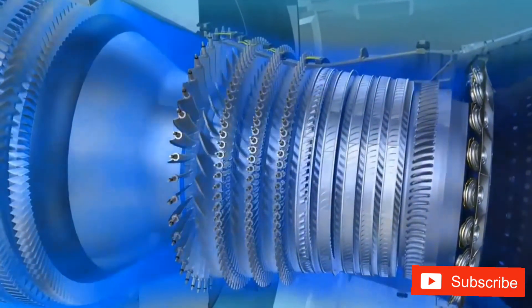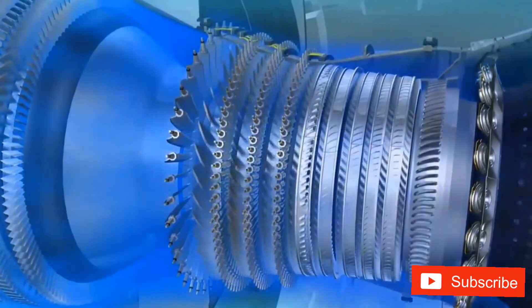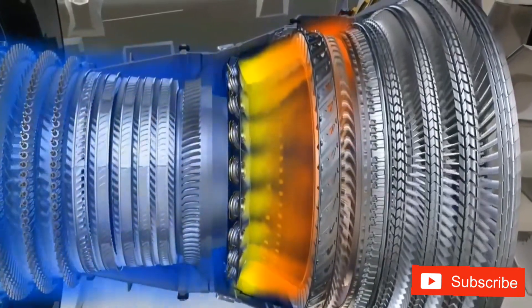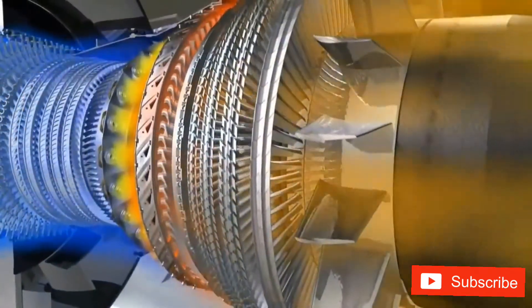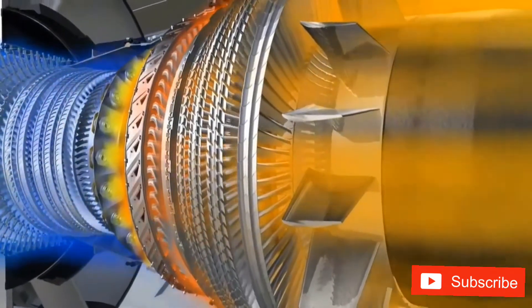The primary flow passes in succession through the compressors, the combustor and the turbines, before being ejected rearwards through the exhaust assembly.